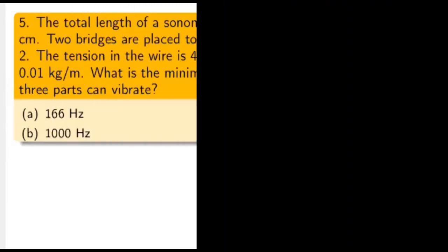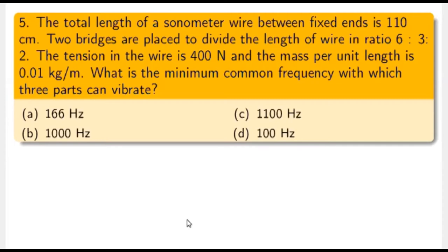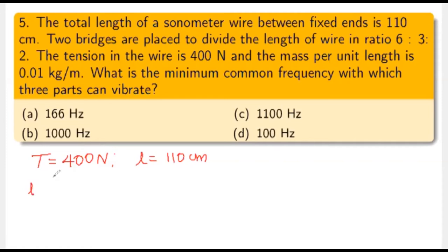Next question: the total length of a sonometer wire between fixed ends is 110 centimeters. Two bridges are placed to divide the length in the ratio 6:3:2. The tension in the wire is 400 newtons and the mass per unit length is 0.01 kg/m. What is the minimum common frequency with which the three parts can vibrate? Tension T = 400 N, total length = 110 cm, ratio 6:3:2, μ = 0.01 kg/m.